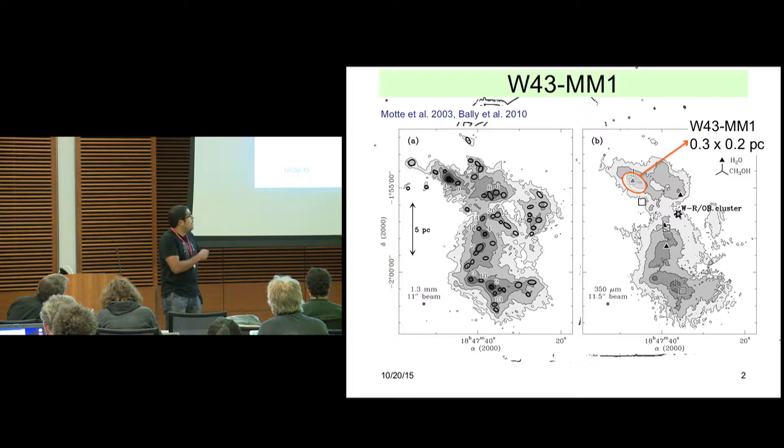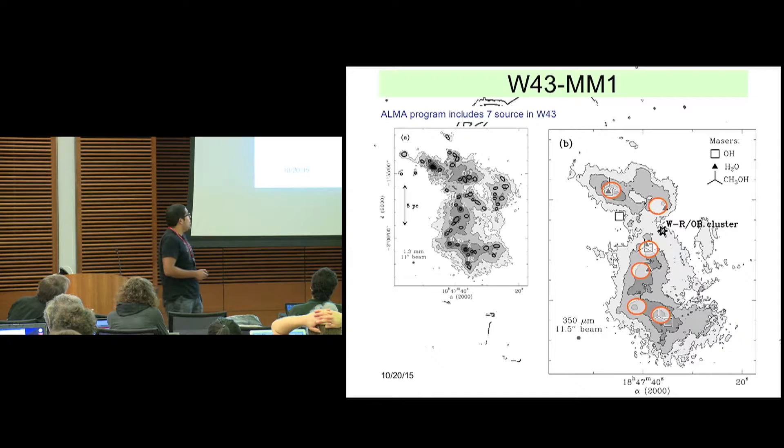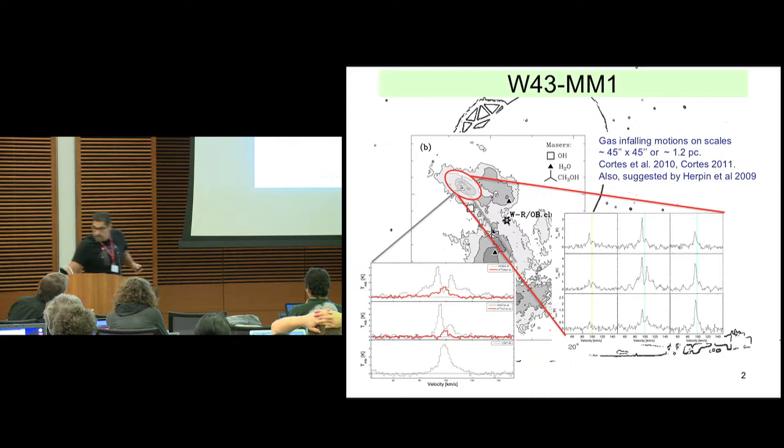That guy is actually pretty massive. It's about 3,000 solar masses. So the program that we did with ALMA includes seven sources. So I basically did a small survey of the brightest peaks towards W43. And the paper that just got accepted two days ago is on that guy.